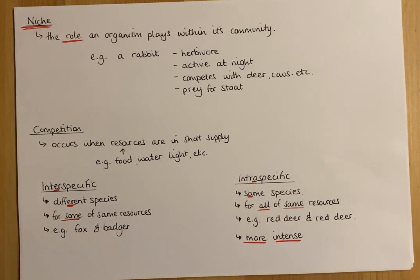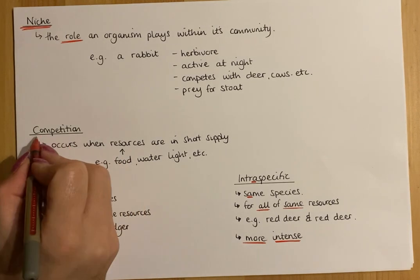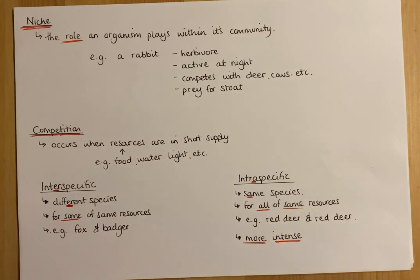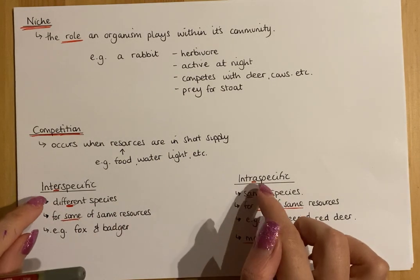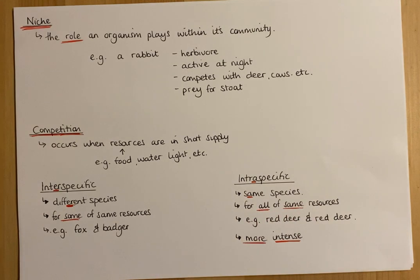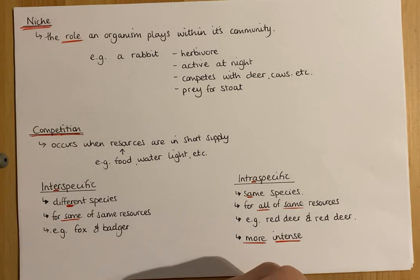That covers all the definitions you need to know for ecosystems. Most of it you'll have known before. The main new things are the two types of competition, the term niche, the descriptions of organism removal effects in food webs. Go back over this video, then try the homeworks and practise some questions.